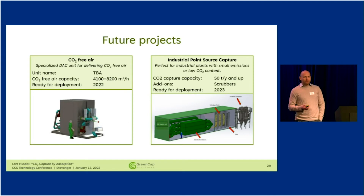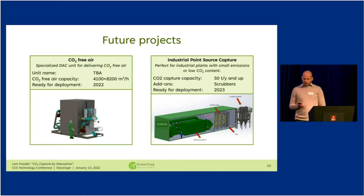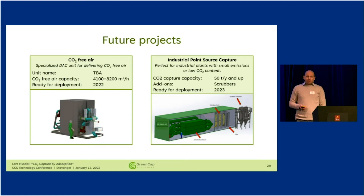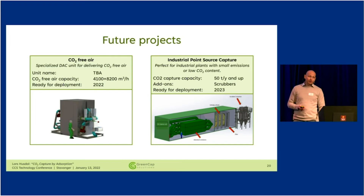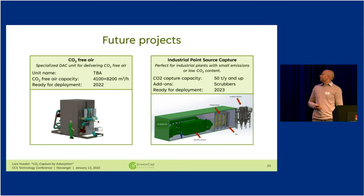We're also interested in industrial point capture. One of the things that increases zeolite capacity is the amount of CO2 in the air. We can use our DAC unit for customers who have low CO2 content in their emissions where it doesn't make sense to install a large CCS plant. If the CO2 content is higher, we'll probably need a larger unit to capture more CO2, and we may also need to add pretreatment like scrubbers to remove contaminants such as SOX or NOX. We believe we can build these kinds of units as early as 2023.